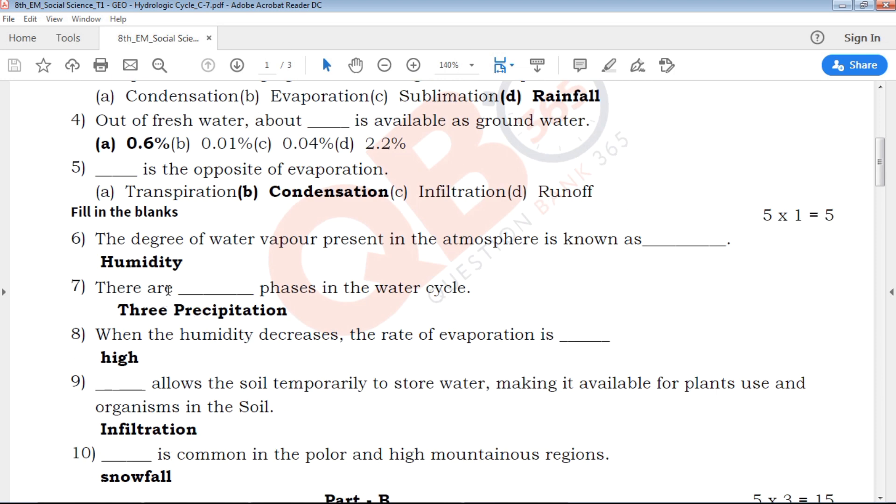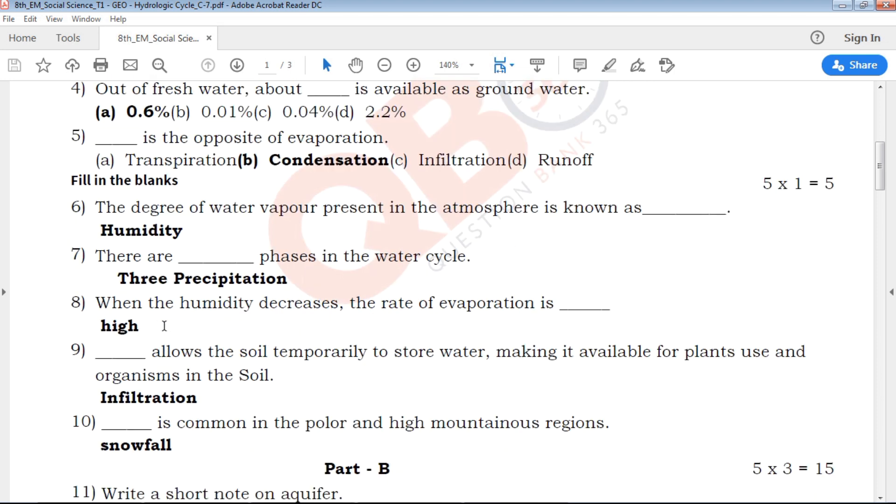Next is fill in the blanks. You can highlight the key answers in this review. So our QB365 is for first students, 6th and 12th students.